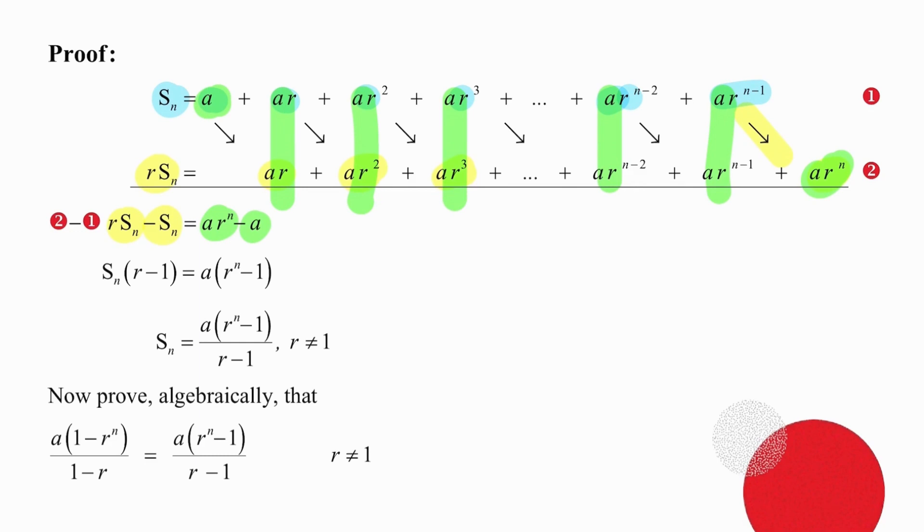Now we are on to step four, where we factorize. So on the left, we take out Sn, which gives us a bracket with r minus 1. On the right, we take out a, which gives us a bracket with r to the n minus 1.